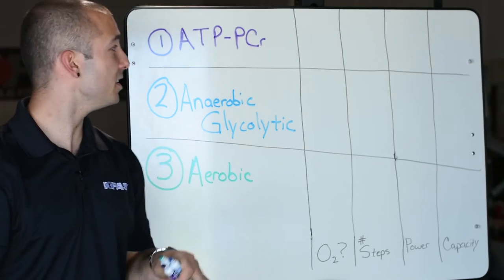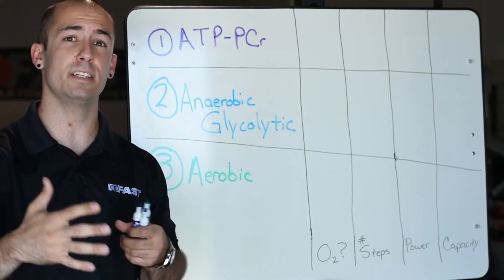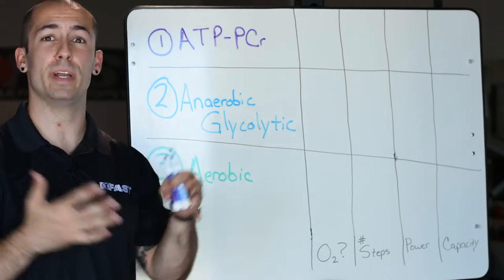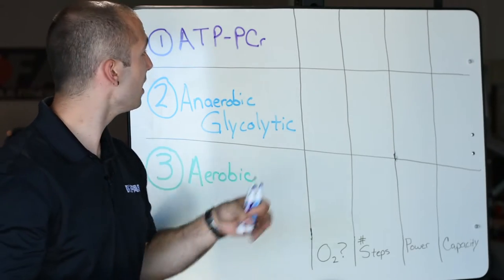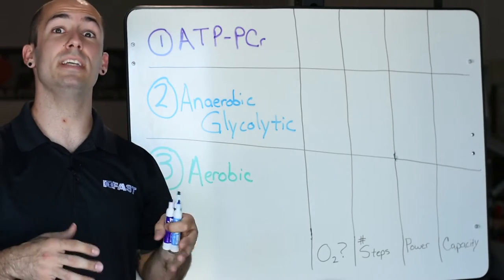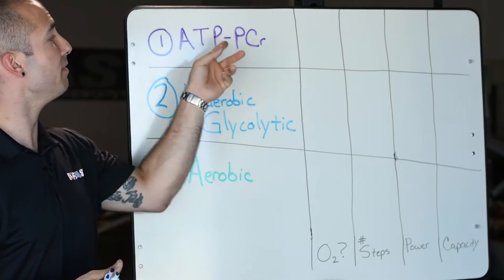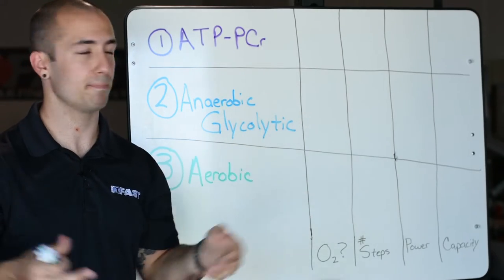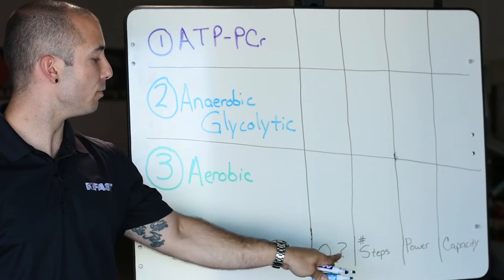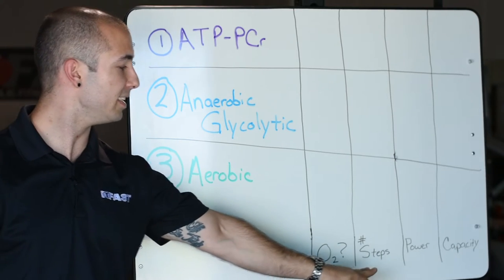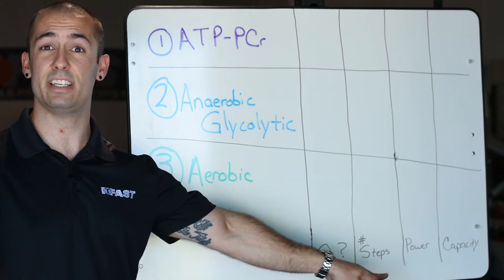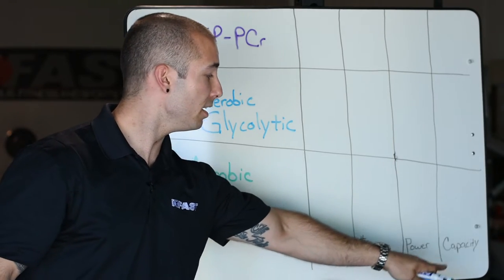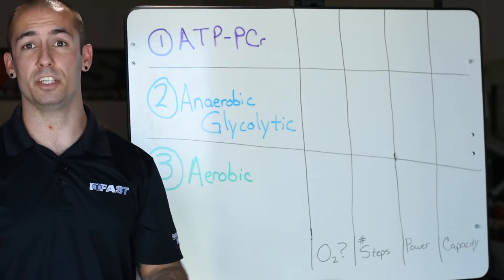The next part of this is just to give you an introduction to these three different energy systems that have the ability to form ATP in muscle. So our first one is the ATP-PCR system - we have our adenosine triphosphate and then a phosphocreatine or creatine molecule. And we're going to label each of these, whether they use oxygen or not, how many steps there are in the process to get ATP, the power, and then their capacity to produce energy.